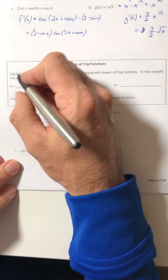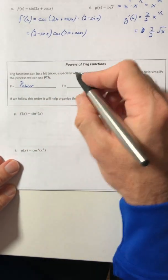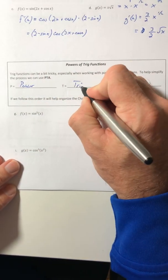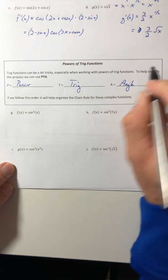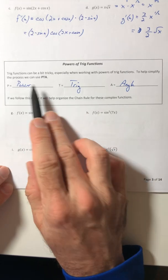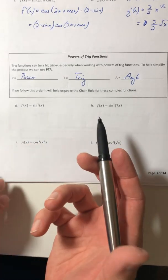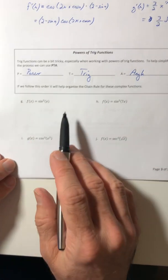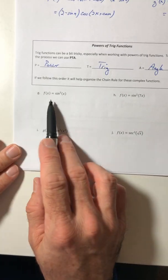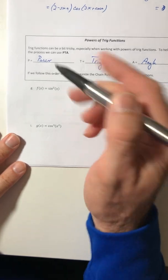PTA: P stands for power, T is the trig function, and A is the angle. This gives you an order for when to take the derivatives of each thing. If you follow it, it'll help organize the chain rule for these complex functions. We're still finding derivatives — the instructions haven't changed.